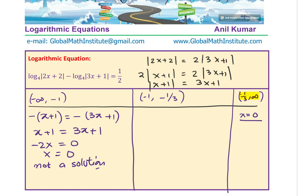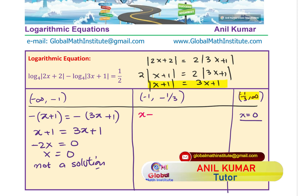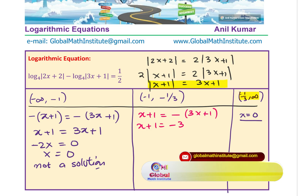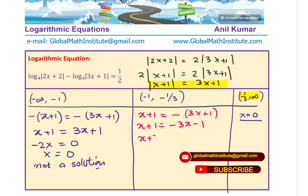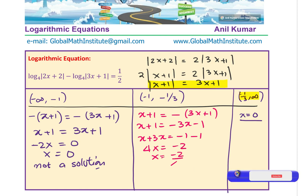Now let's look at the center interval between −1 and −1/3. In this interval, 2x + 2 is positive while 3x + 1 is negative. So we write x + 1 = −(3x + 1), which expands to x + 1 = −3x − 1. Collecting terms: 4x = −2, giving x = −1/2. Since −1/2 is within the interval (−1, −1/3), it is a valid solution.